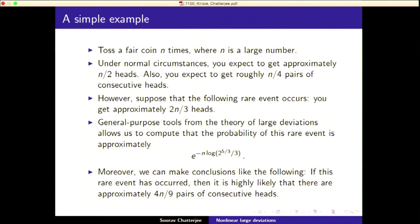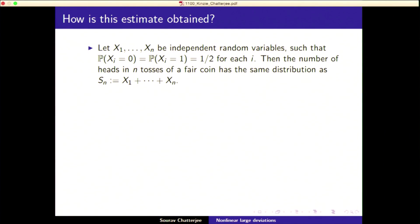You can do this in many ways — using Stirling's formula and so on — but as in math, there is only one way which generalizes to more complicated settings. So suppose x₁ to xₙ are independent random variables, each 0 or 1 with probability one-half. Then the number of heads in n tosses is the sum of these random variables, and you want to find the chance that you get at least 2n/3 heads.